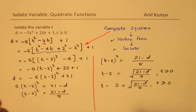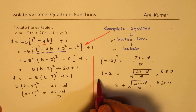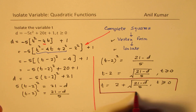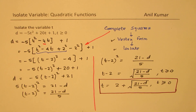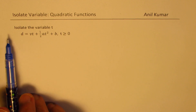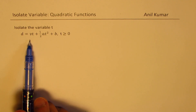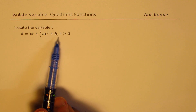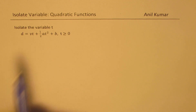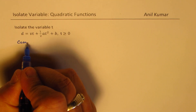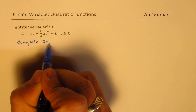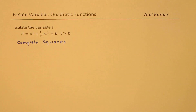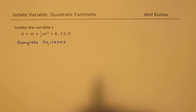So these are the steps involved when you really want to isolate a variable from a quadratic equation. Completing the squares is the key to doing this. We are going to take now a general example so that you could isolate from any quadratic equation. So that is the last part — this is the general equation. We need to isolate the variable t: d is equal to vt plus half a t squared plus b, where t is greater than or equal to 0. To isolate t, the first step will be to complete the squares.